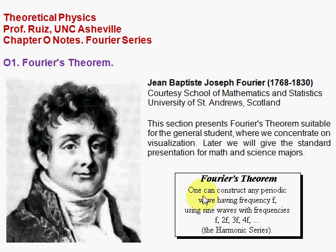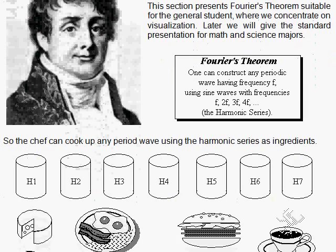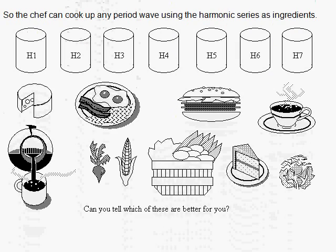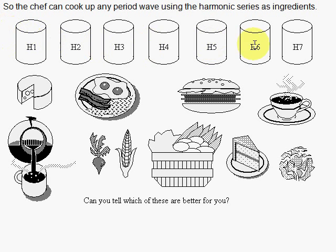The theorem states that you can construct any periodic wave having frequency f using the sine waves with frequencies f, 2f, 3f, 4f, and so on for harmonic series. So, we can cook up any periodic wave using our ingredients, the harmonics.